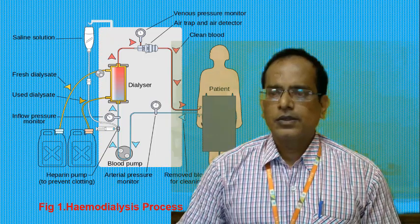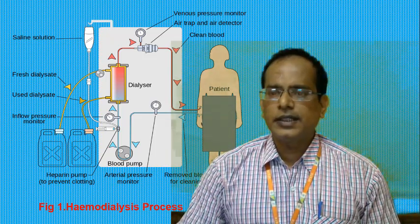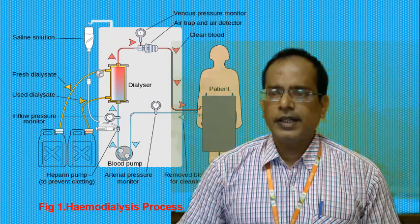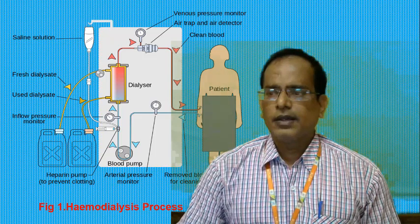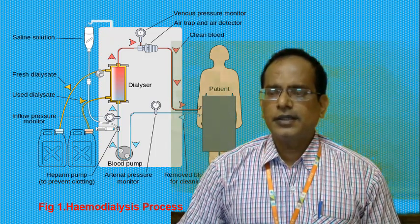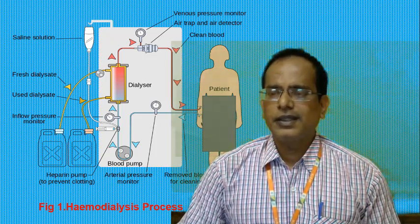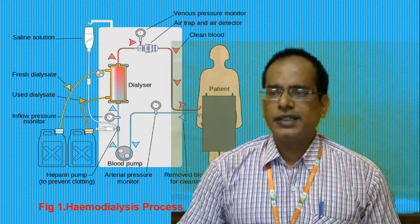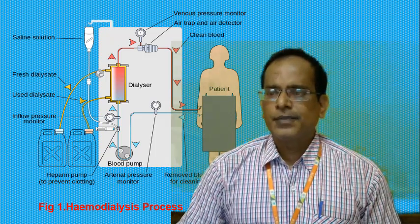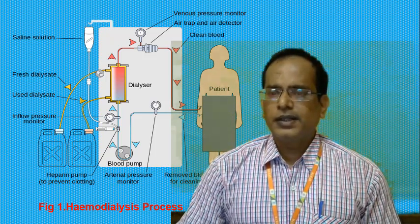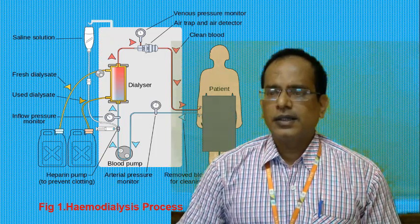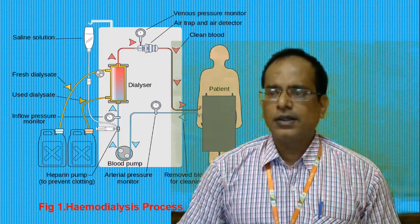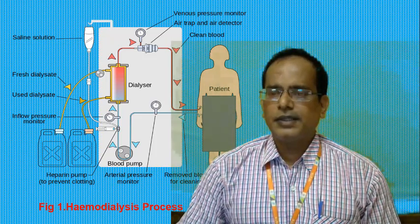The end result of renal failure is usually death unless the blood is filtered by other means. The ideal intervention is replacing the failed kidney with a donor kidney. While a person waits for a donor kidney, they usually have to undergo dialysis — a method where the blood is filtered and cleaned on a regular basis using dialyser machines.